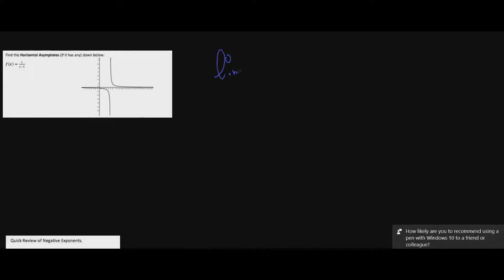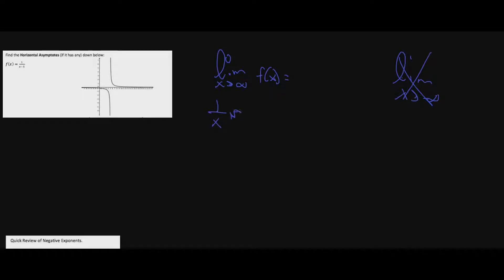Let's take a look at this one — we've done this problem before. Find the horizontal asymptotes of this function. We start by doing the limit as x approaches infinity. I don't need to do the limit as x approaches negative infinity because if the right has a horizontal asymptote, the left will too. We ignore the bottom, so we get 1 over x, and plugging in infinity gives us 1 over infinity, which approaches zero.